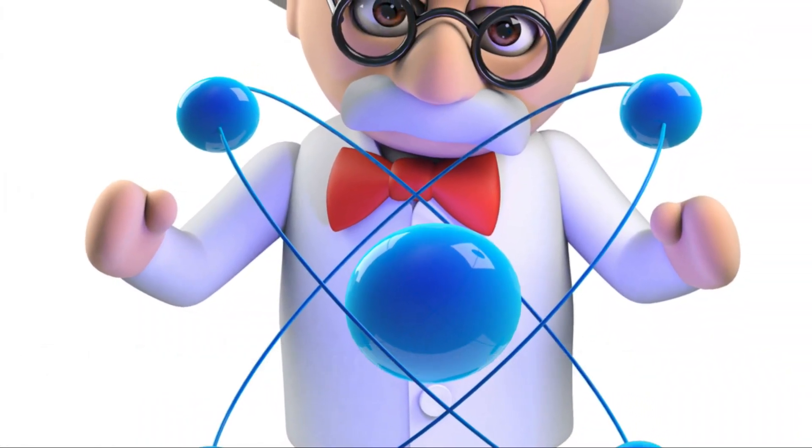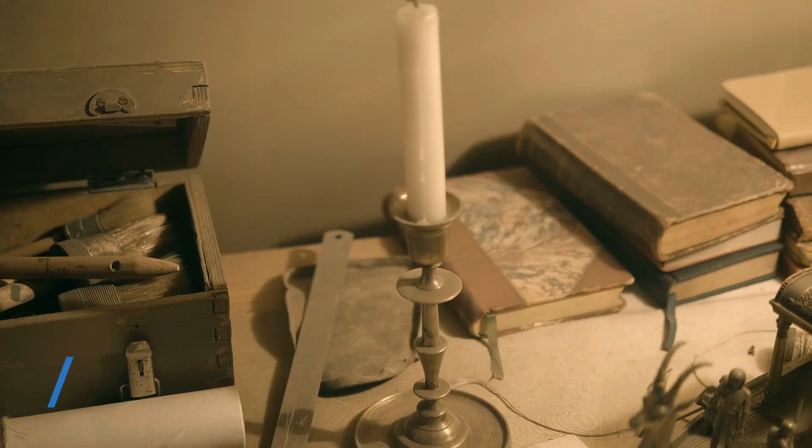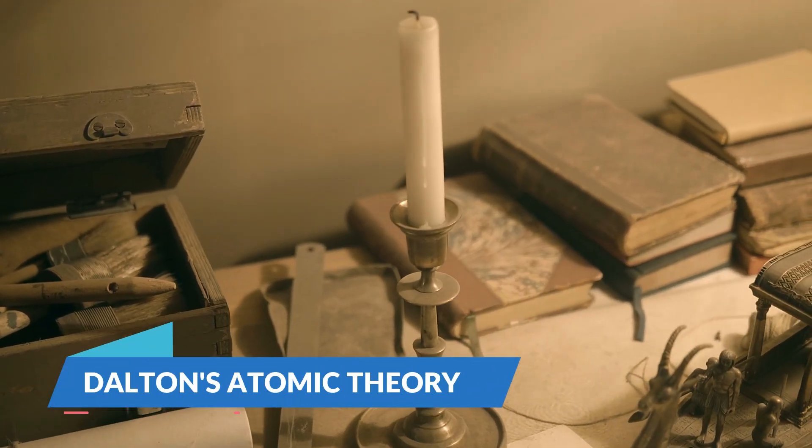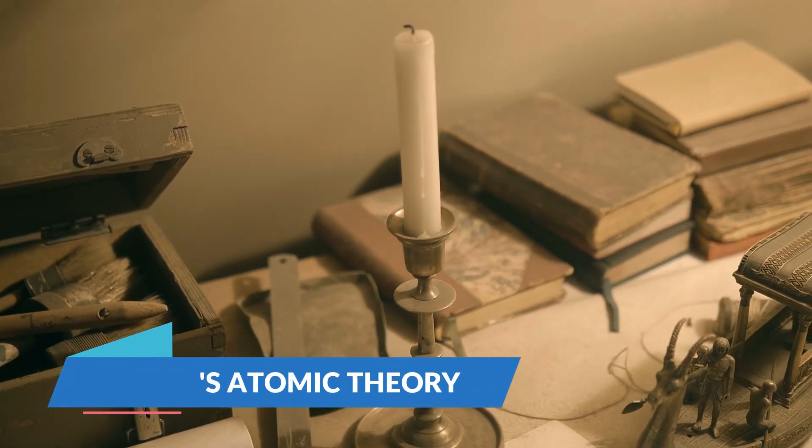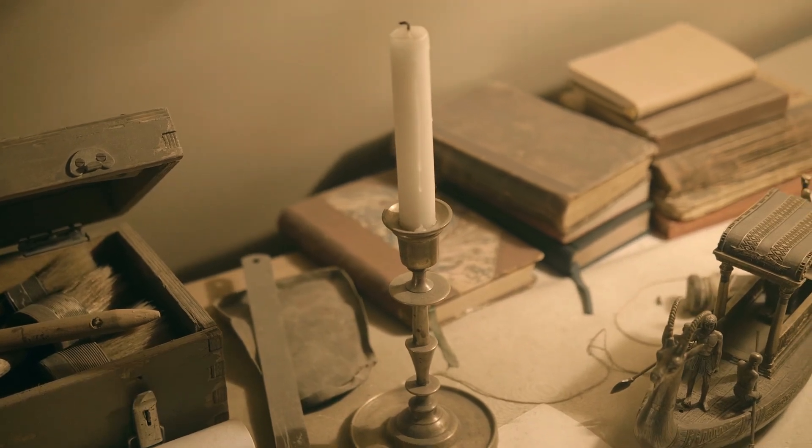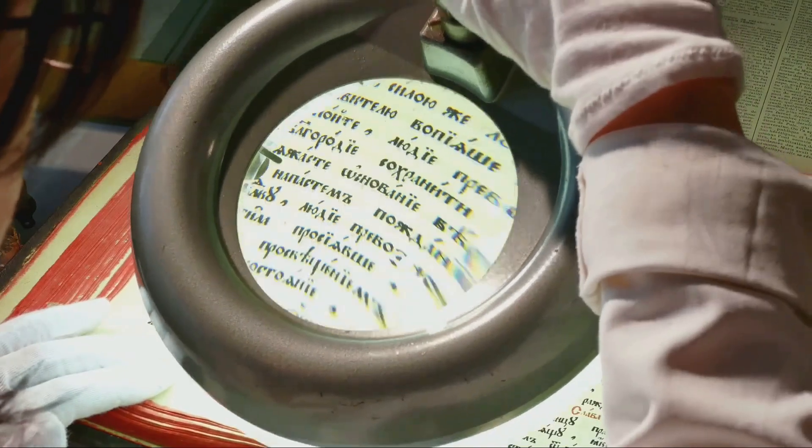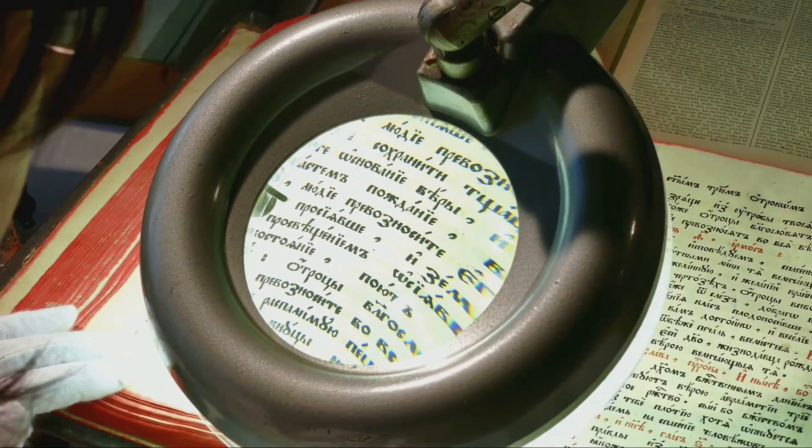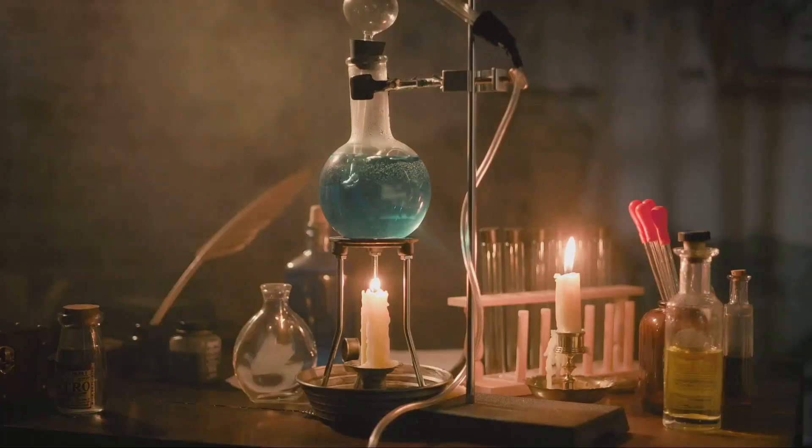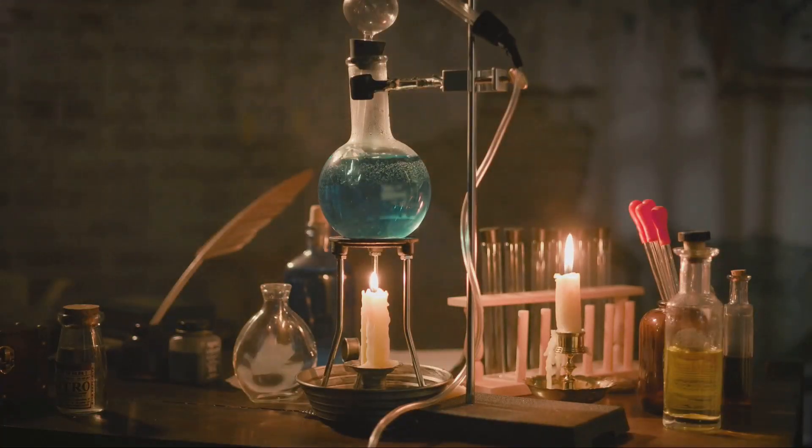In the early 19th century, a British chemist named John Dalton proposed a revolutionary theory that would forever change our understanding of matter. Dalton's atomic theory, published in 1808, was a watershed moment in the history of science. It marked the beginning of modern chemistry and paved the way for countless discoveries in the centuries that followed.